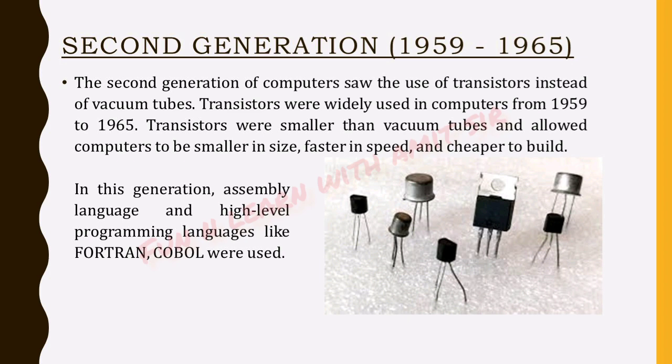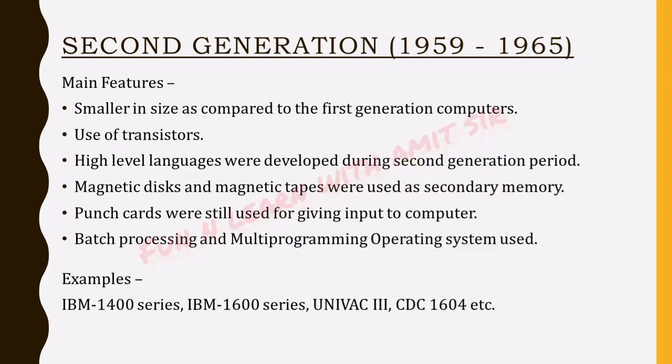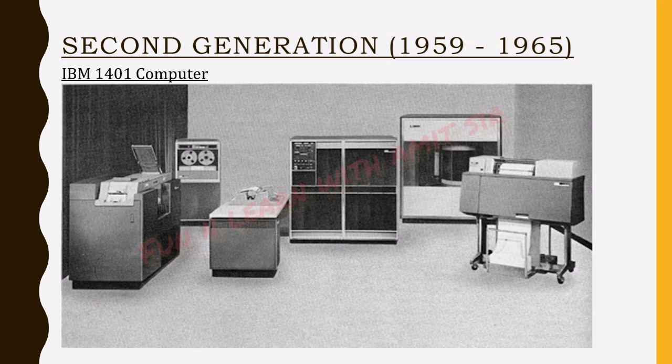In this generation, assembly language and high-level programming languages like FORTRAN and COBOL were used. Main features: computers were smaller compared to first generation; transistors were used; high-level languages were developed; magnetic disks and magnetic tapes were used as secondary memory; punch cards were still used for input; and batch processing and multiprogramming operating systems were used. Examples include IBM 1400 series, IBM 1600 series, UNIVAC 3, and CDC 1604.